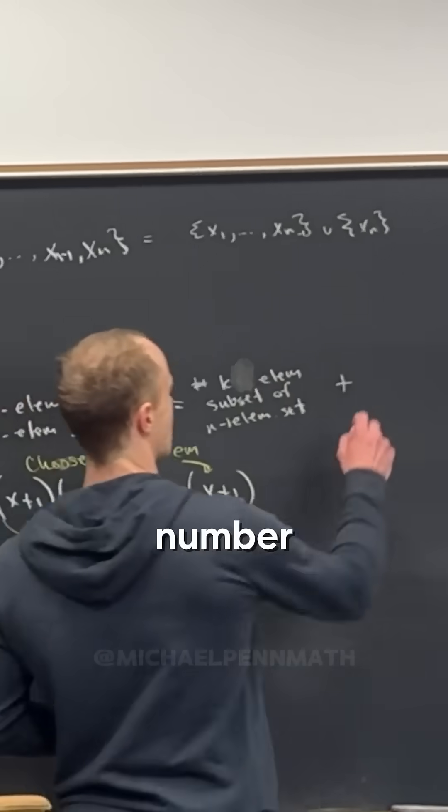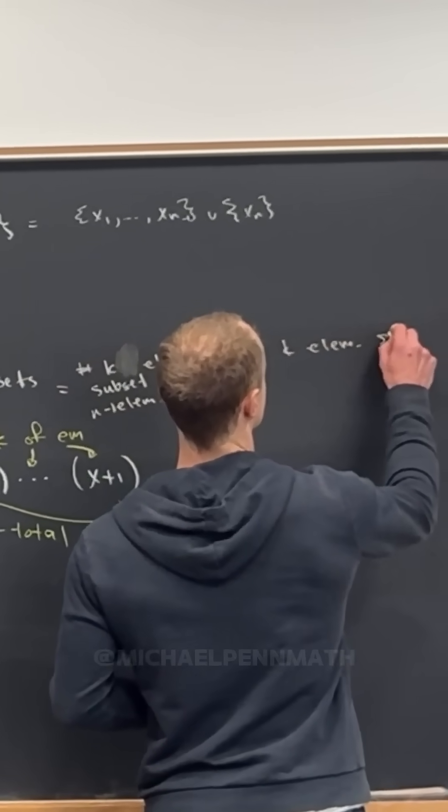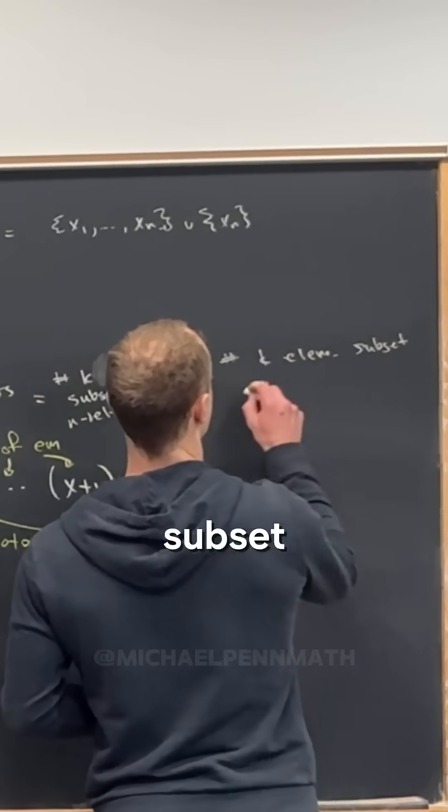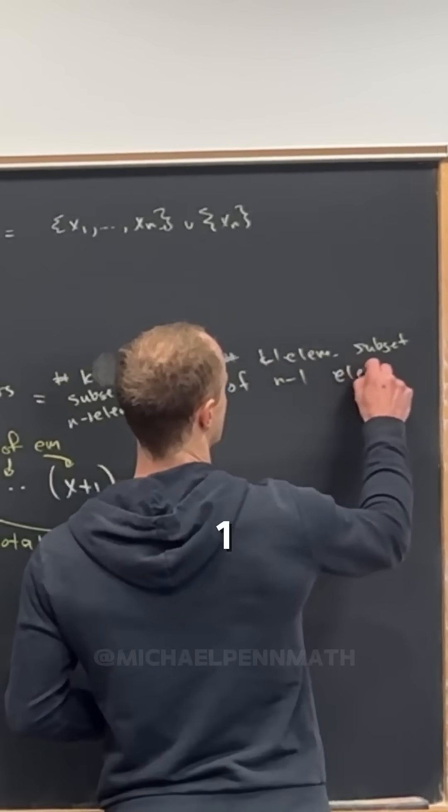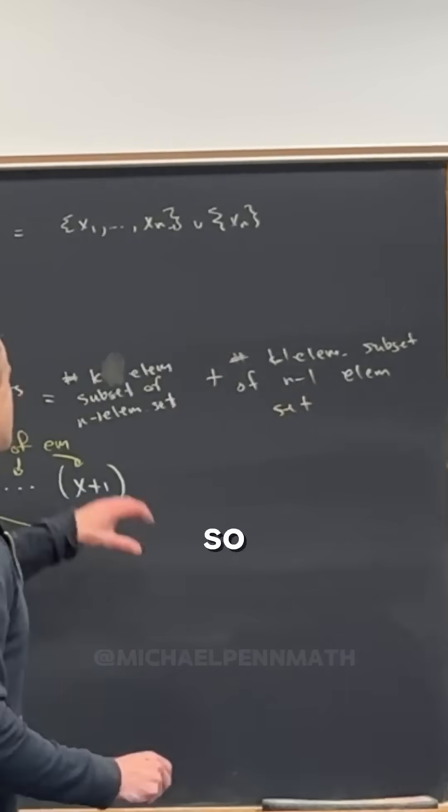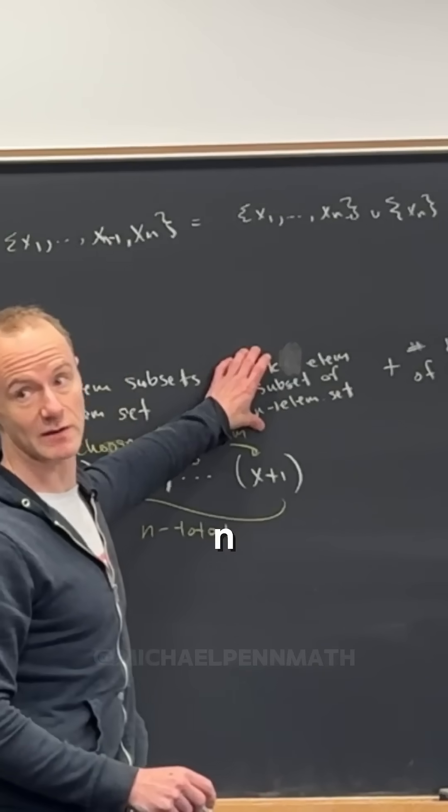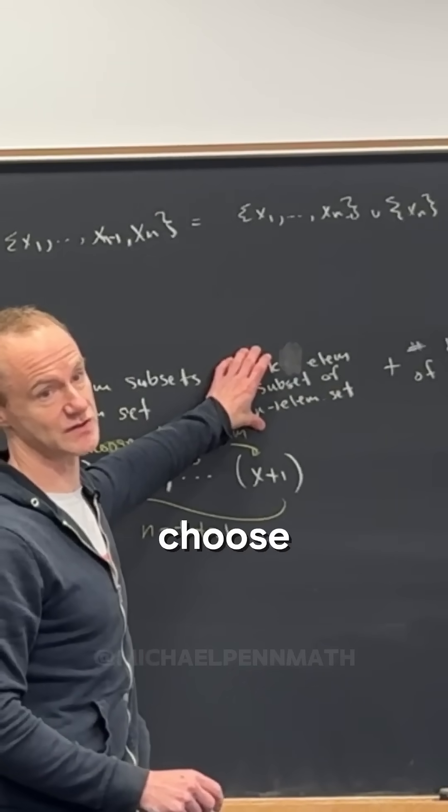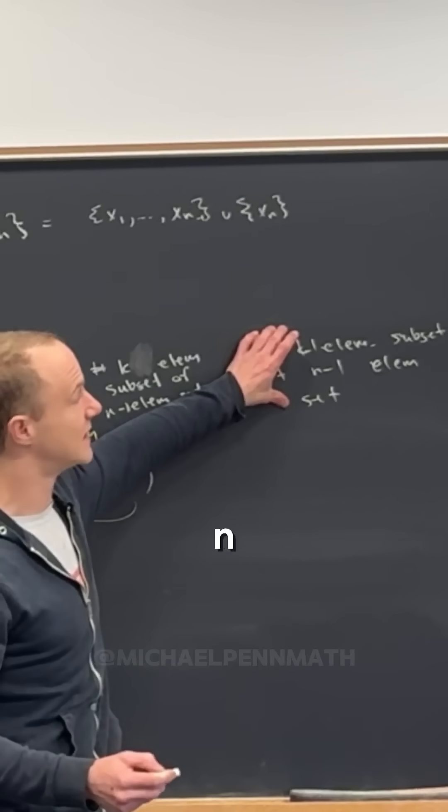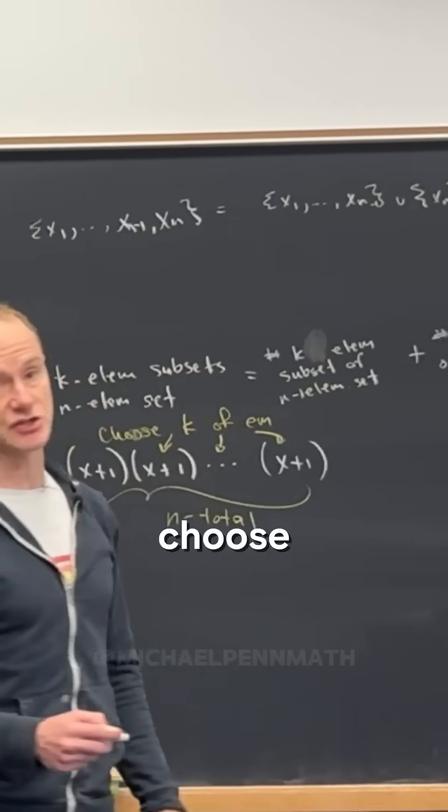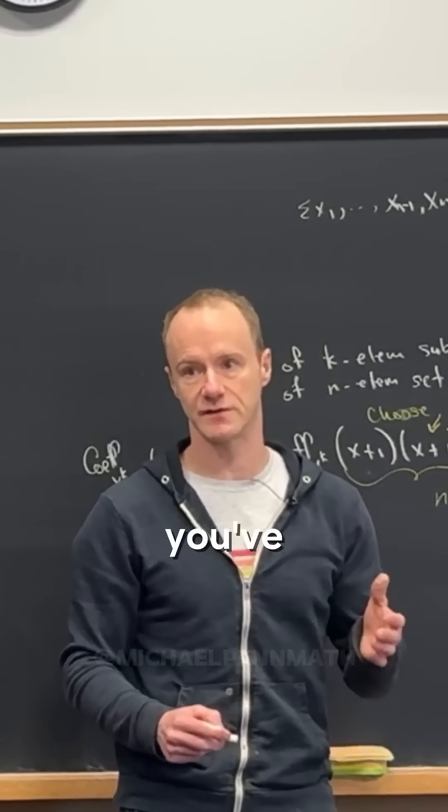But all the ones that do contain xn are going to only have k minus one choices, because you can choose only k minus one things if you've already chosen xn. So this is going to be the number k minus one element subset of n minus one element set. These are all the ones without xn - without xn you only have n minus one things to choose from, you have to choose k of them. This is the ones including xn. If you've chosen xn, you only have n minus one things to choose from and you're only allowed to choose k minus one of them because you've already chosen one.